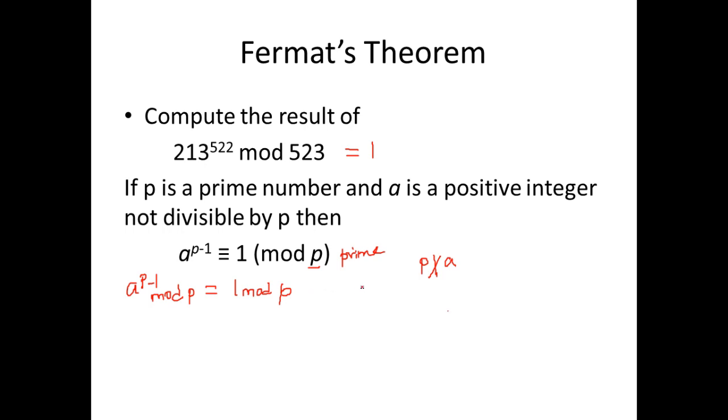To understand this better, let us take an example. Let us take a to be 2 and p to be 3, and we are checking these two important conditions. One, p is a prime number, yes. And p does not divide a, and a is not divisible by p. So even that is true. So we will apply the values here: a is 2, p is 3, 3 minus 1 mod 3.